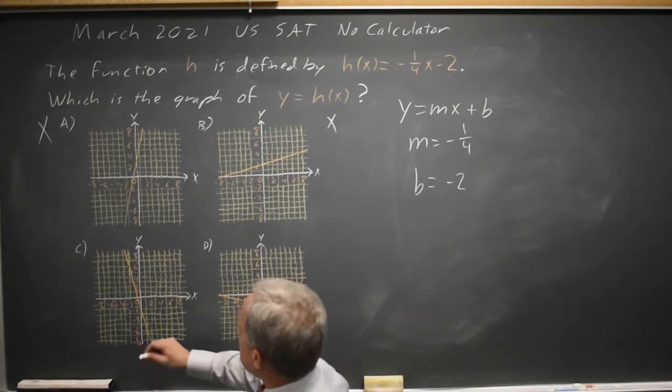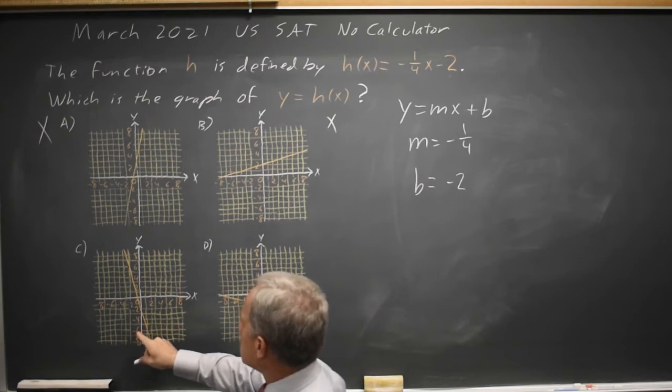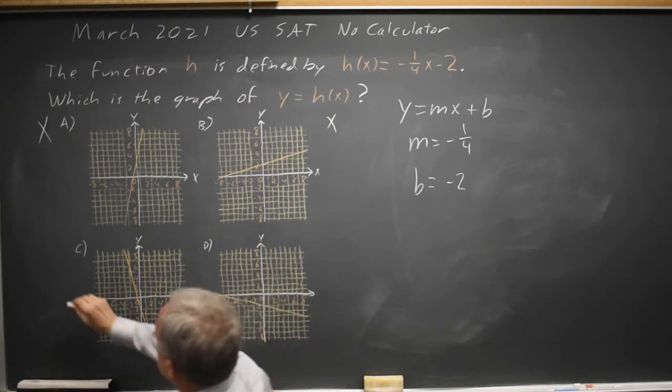In choice C, we go down one, two, three, four and right one, so that's a negative four. That's not correct.